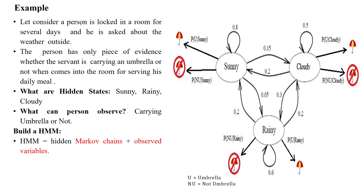The given problem statement is: a person is locked in a room for several days and is asked about the weather outside. That room is very dark — all the windows and doors are closed. The person has only one piece of evidence: whether the servant is carrying an umbrella or not carrying an umbrella when entering the room to serve his daily meal.